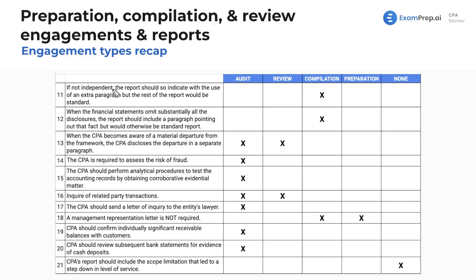If not independent, the report should indicate that with an extra paragraph, but the rest of the report would be standard. Independence in audits and reviews is non-negotiable, so we wouldn't have that situation there. For preparations, we don't need to be independent and don't need to discuss it. However, in compilations, regardless of your independence status, you need to assess it and mention it in the report.